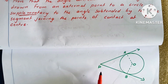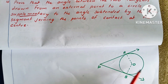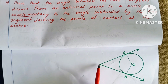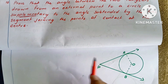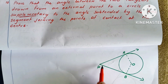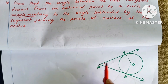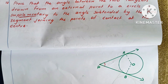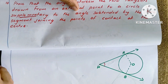We need to prove that the angle between the two tangents is supplementary. The external point is P, and the angle between the two tangents at P is supplementary to the angle subtended at the centre.